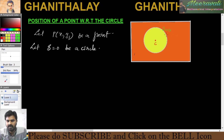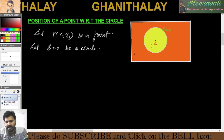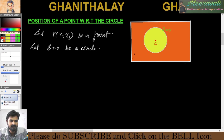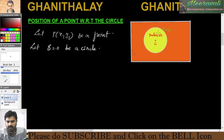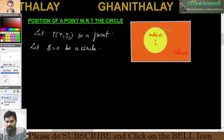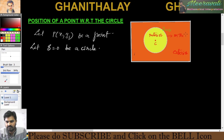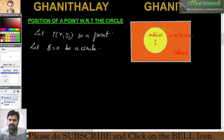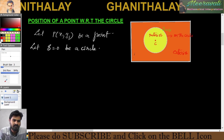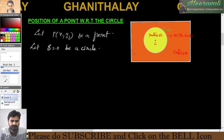A circle divides a plane into three parts: interior, exterior, and on the circle. We have to decide whether the given point is interior, exterior, or on the circle. We have the condition: if S11 equals zero, the point lies on the circle. The orange color part is called exterior, and the circumference — the curved part — is called on the circle.